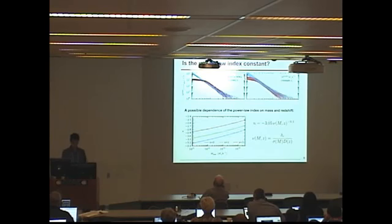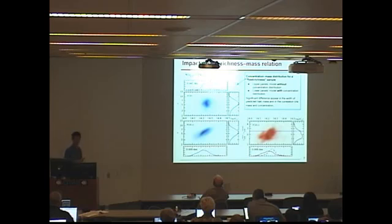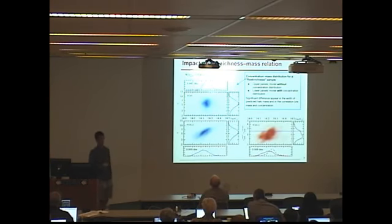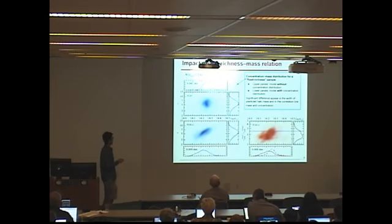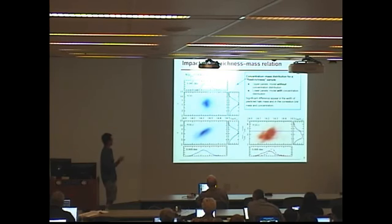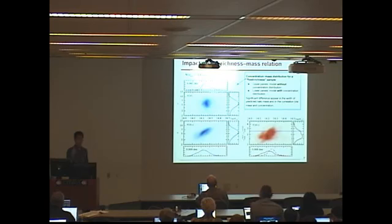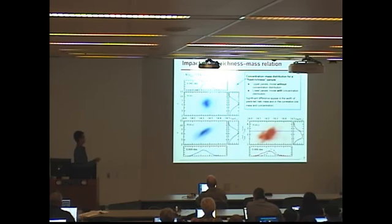Now for the implications. The first is the richness-mass relation. People use richness — basically subhalo count or satellite count — as a proxy for host halo mass, which is reasonable because it scales most strongly with host halo mass. But if you include the concentration dependence in the model, the mass distribution at fixed richness becomes much wider, with a strongly correlated concentration-mass distribution. This is very important if your application of the richness-mass relation requires concentration information, because ignoring the concentration dependence will give you very different concentration estimates.